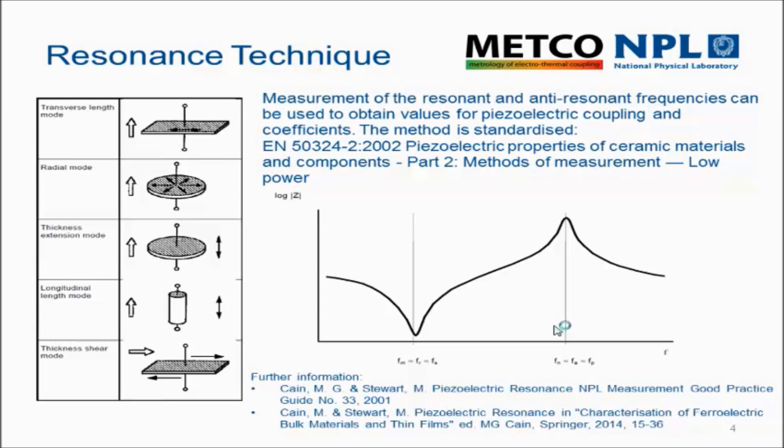The standard specifies a number of geometries which enhance particular resonant modes, and those different resonant modes can be used for deriving different parts of the piezoelectric coefficients. Typically there's a transverse length mode for measuring D31, a radial mode, a thickness extensional mode, and a longitudinal length mode which emphasises the 33 movement, and a shear mode resonator as well. There's quite a lot in the standard, and also in the original IEEE standard which preceded it. NPL have also published a number of reports on some of the techniques.